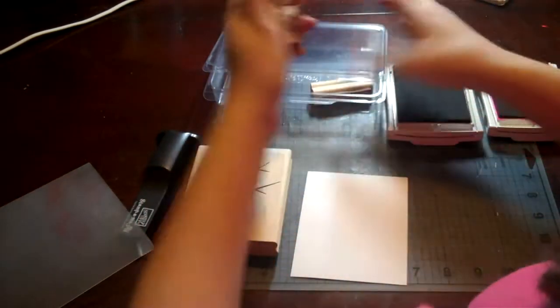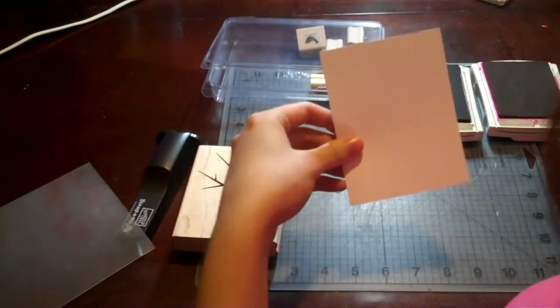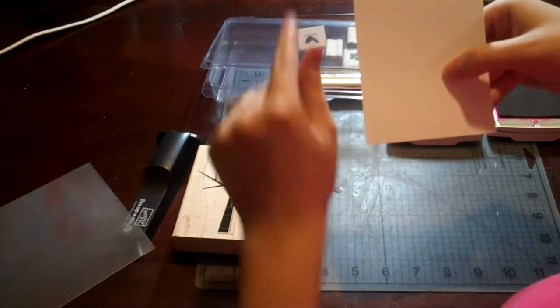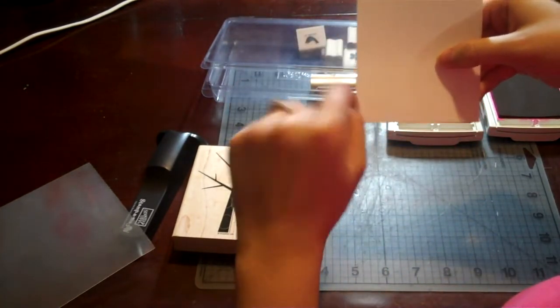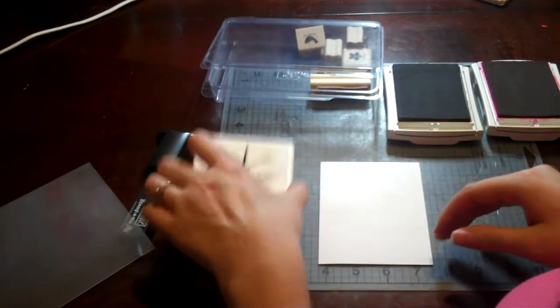We're going to start by stamping our tree. I already cut my paper down. I think it's 3.75 on this side by 5 inches on this side, so I can put a little border around it and make a full-size card.